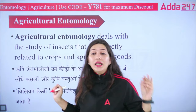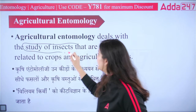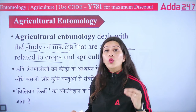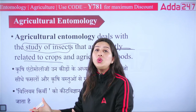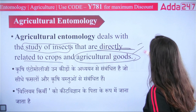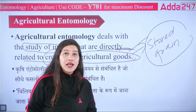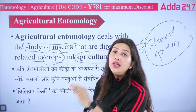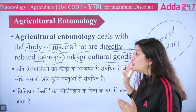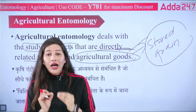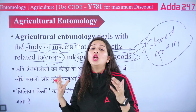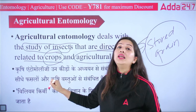If we are studying all insects, that is broad zoology. But in agricultural entomology, we study those insects directly related to crops — the pests that eat crops and damage them, or storage pests. We also study insects that act as vectors for crop diseases. The father of entomology is William Kirby — this is an important question.